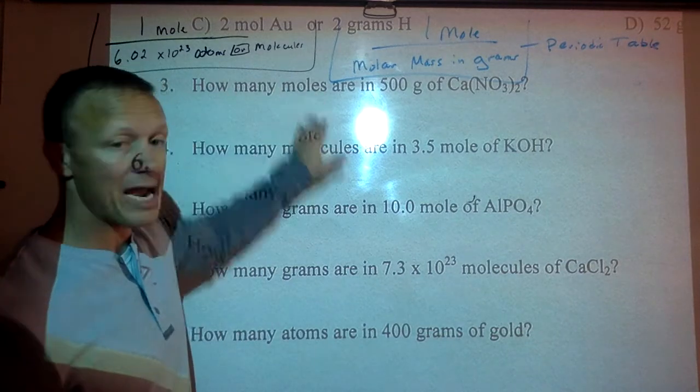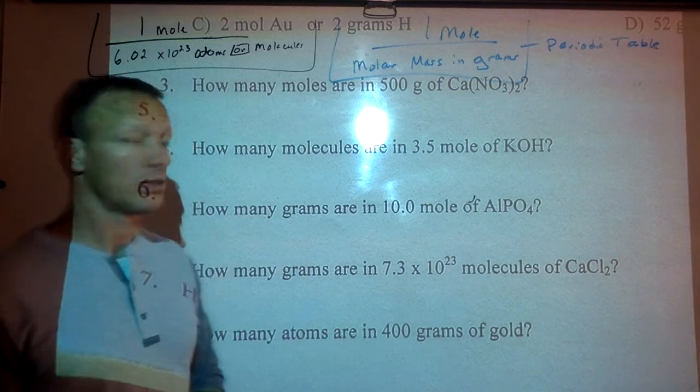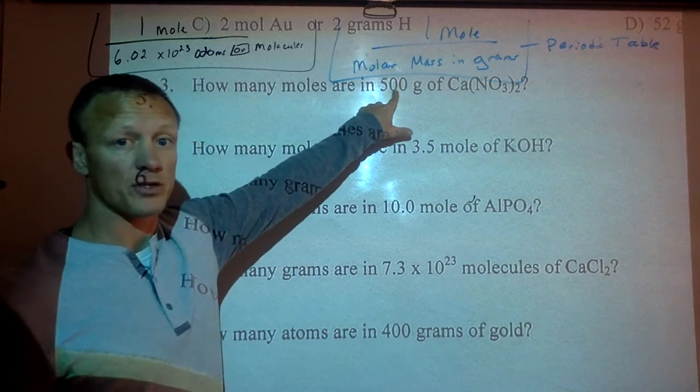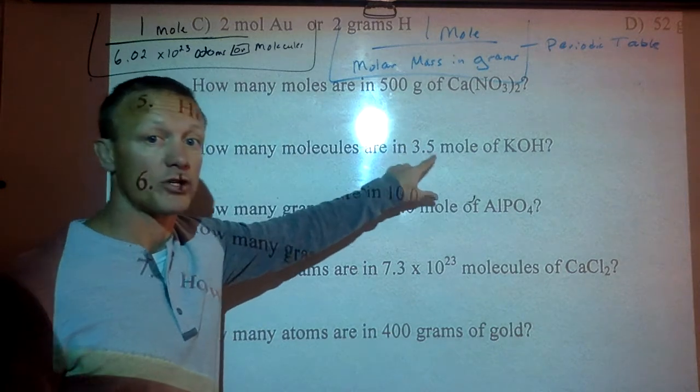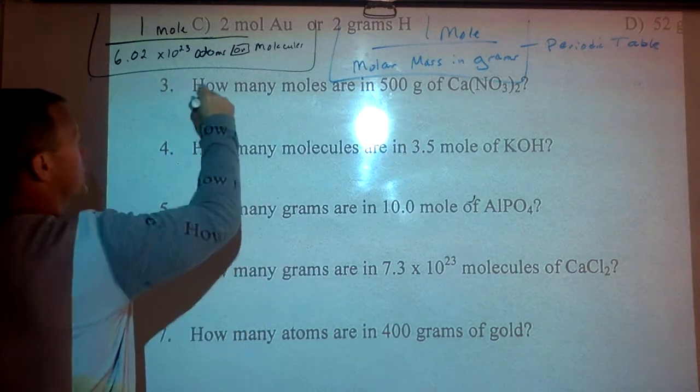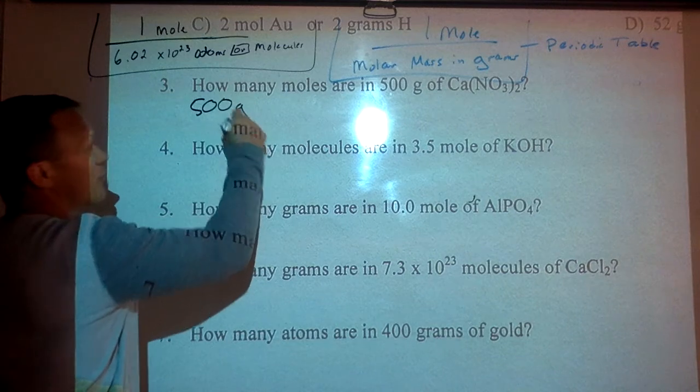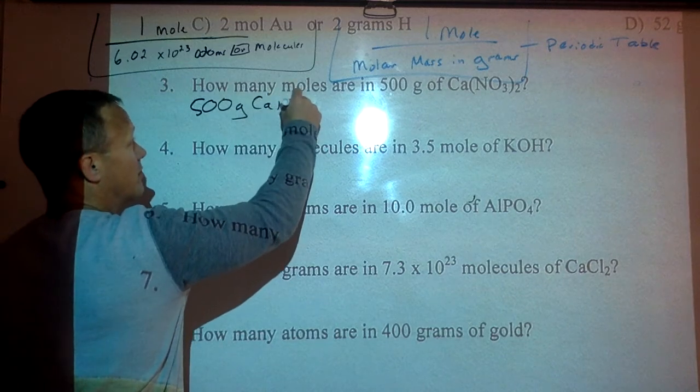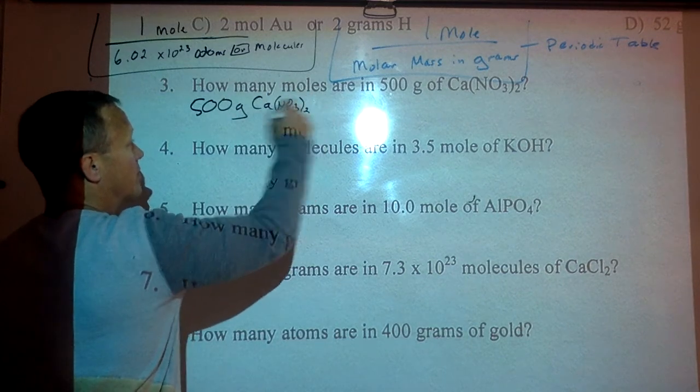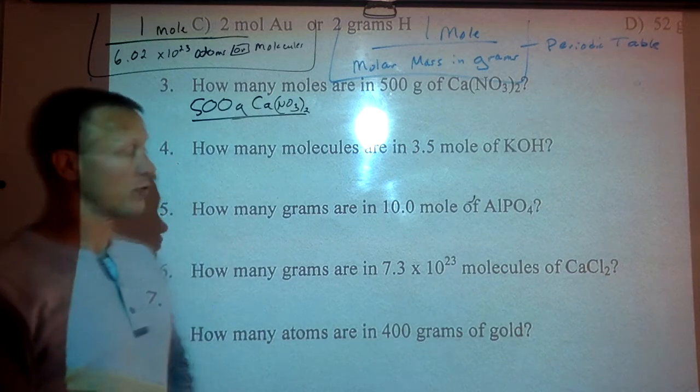So number three here, as soon as it says, how many moles, I know it's going to be a one-step conversion. Are in 500 grams of this? So always start with the number they give you. So this problem, I'll start with 500 grams. So we go 500 grams of calcium nitrate. So we're talking about formula units here, or molecules.